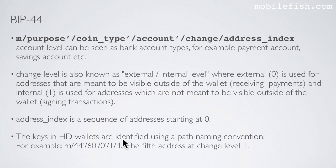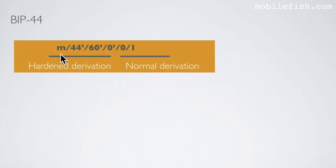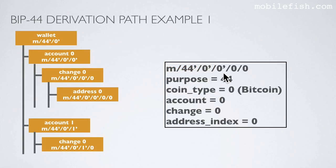This is the fifth address at change level 1. This is an example of a derivation path. Values using apostrophes indicate hardened derivation; values without apostrophes indicate normal derivation. The purpose is 44, which means this derivation path complies to Bitcoin Improvement Proposal 44. The coin type is 0, which means Bitcoin. The account is 0, the change is 0, and the address index is 0.